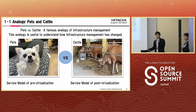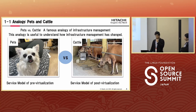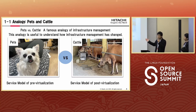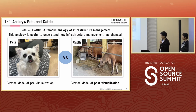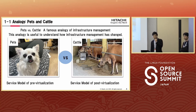Have you ever heard of the analogy called 'Pets versus Cattle'? This analogy is useful to understand how infrastructure management has changed up to today. By the way, the dog on the left is my boss's dog named Dorop, and the picture on the right was taken by Masaki. Pets is described as a service model of pre-virtualization, like on-premises. On the other hand, cattle is described as a service model of post-virtualization.